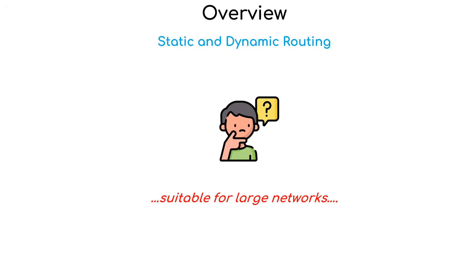This is the reason why static routing is not suitable for large networks, because in large networks changes occur frequently, and using static routes can be burdensome for engineers during configuration. So in this case we choose dynamic routing as our choice.